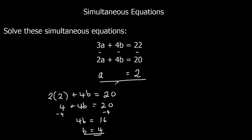So here I've solved the simultaneous equations: a is 2 and b is 4. I can always check an answer by substituting them back in. If I look at the top equation now, 3 times a is 3 times 2 which is 6, plus 4 times b which is 4, so 6 plus 16 equals 22. It does, so we know we've done it right.